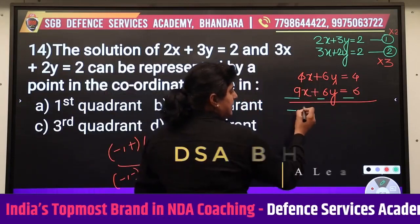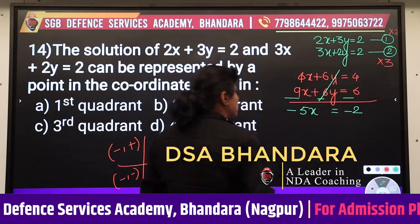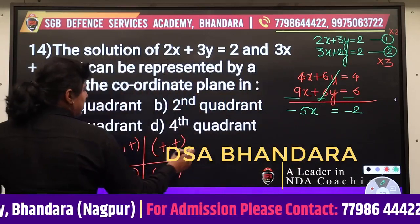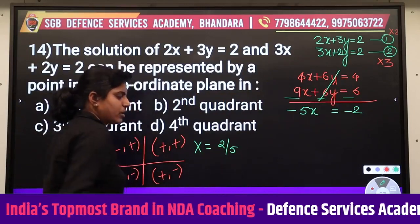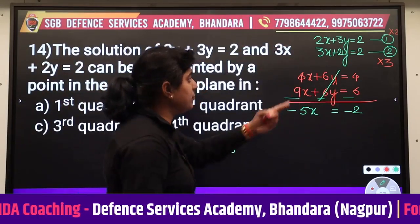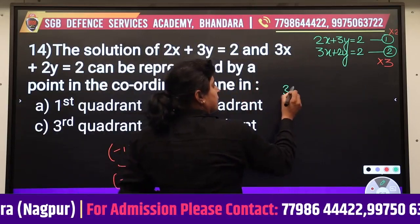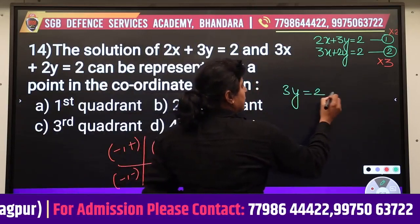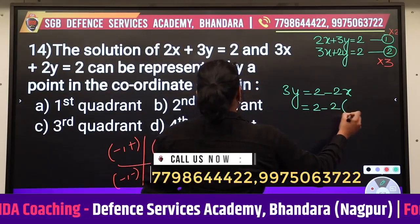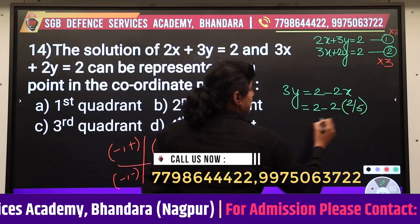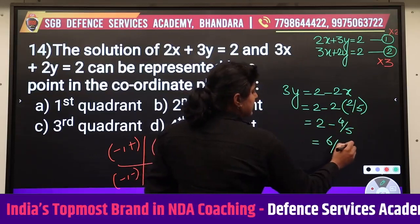Now subtract: the 6y terms cancel, giving -5x = -2, so x = 2/5. Substituting this x value into equation 1: 3y = 2 - 2x, so 3y = 2 - 2×(2/5) = 2 - 4/5 = 6/5.